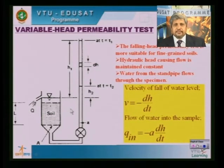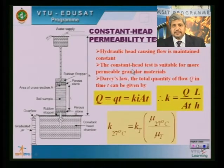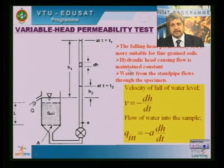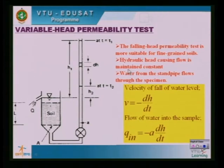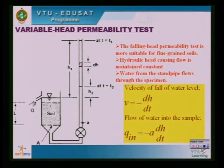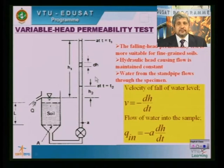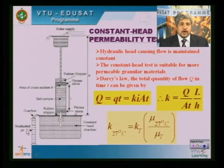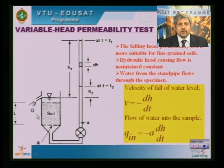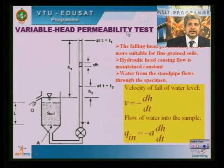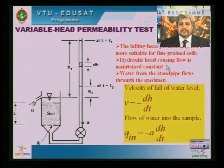Now let us look into the other test. As mentioned, the constant head test is suitable for more granular, permeable soils. For fine-grained soils where permeability is very low — in the order of 10⁻⁵, 10⁻⁶, 10⁻⁷, even up to 10⁻⁸ mm/s, which is considered almost impermeable — we may not get an appreciable quantity of water measurable in the graduated cylinder. So we employ the variable head permeability test, which is most suitable for fine-grained soils with very low coefficient of permeability. Here, the results are not interpreted directly from Darcy's law but derived from a separate equation.